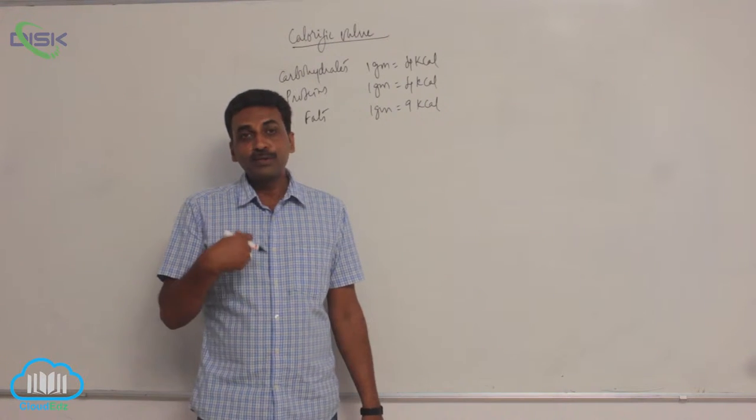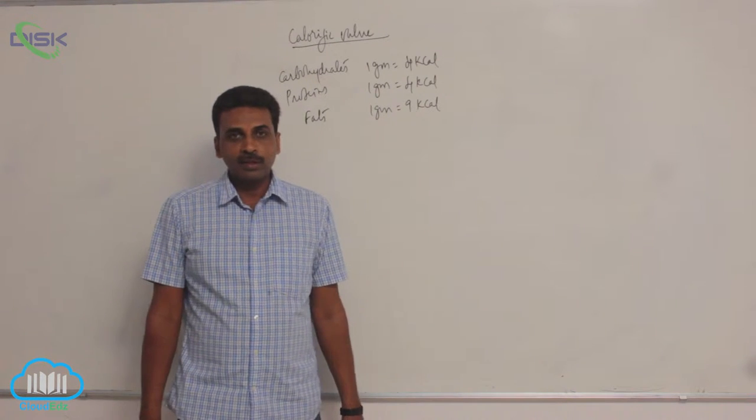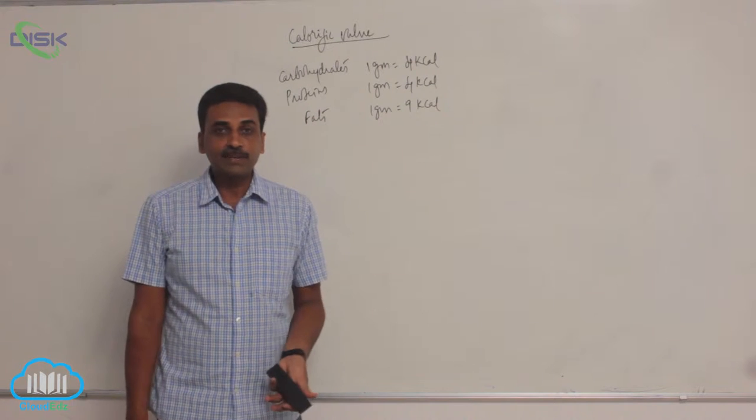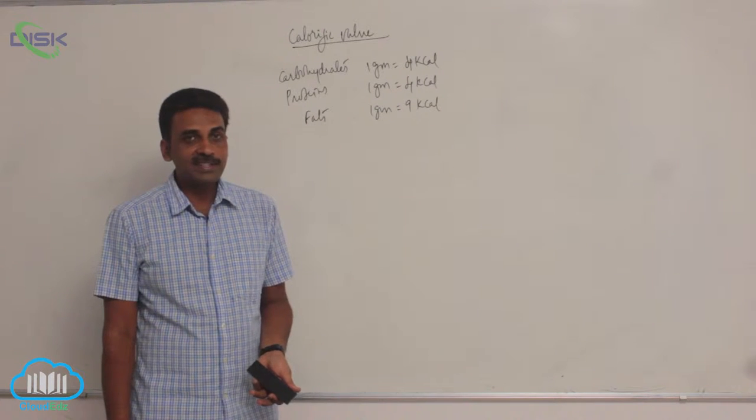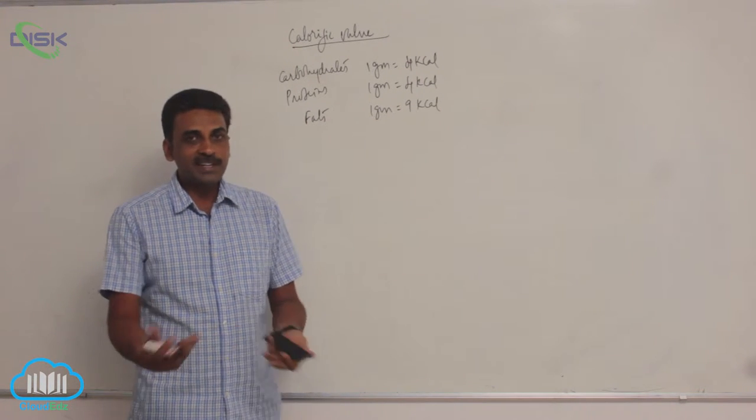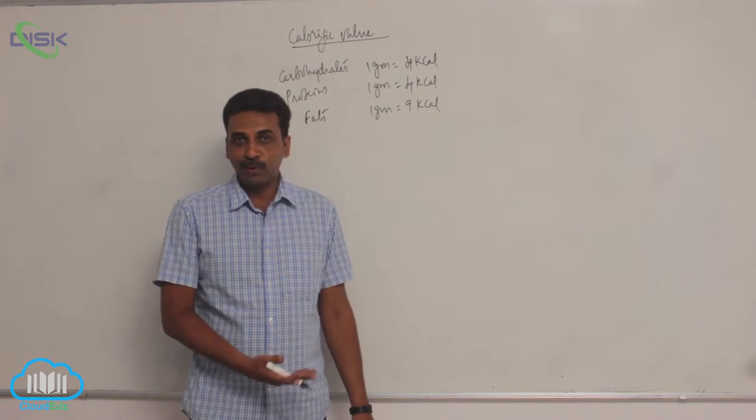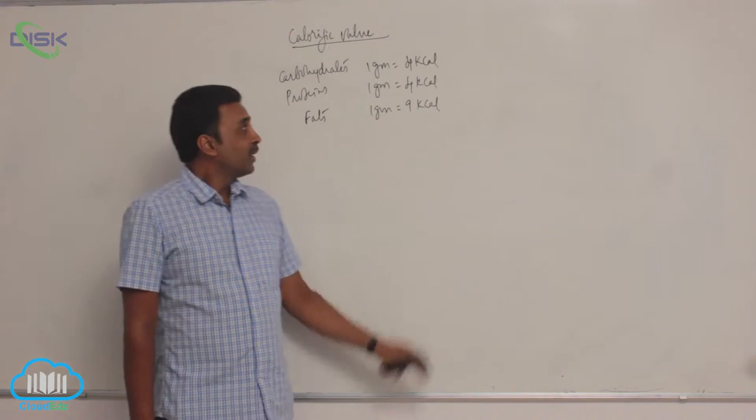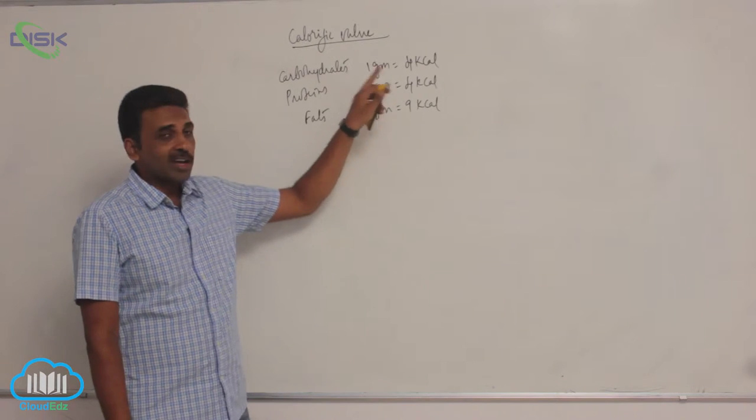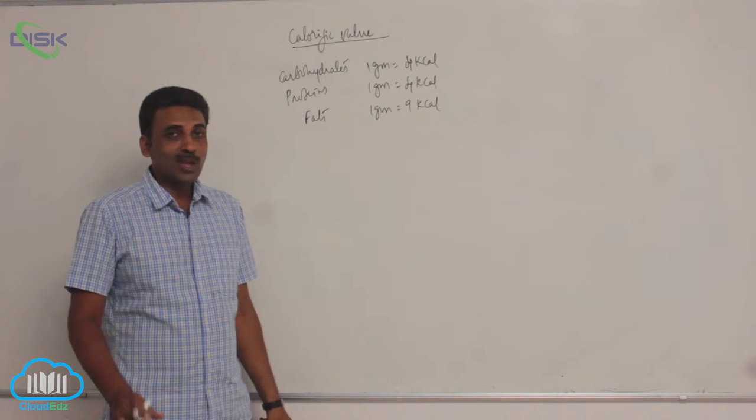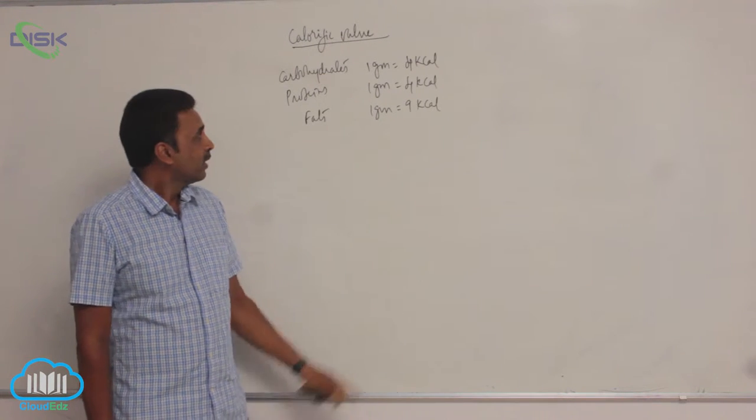Calorific value of the foods that we take in. The major organic substances which provide energy in a balanced diet are carbohydrates, proteins, and lipids. One gram of carbohydrate produces 4 kilocalories of energy. Likewise, 1 gram of proteins also produces 4 kilocalories of energy.